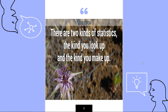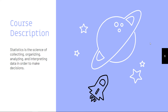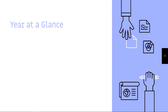A great statistics quote: 'There are two types of statistics — the kind you look up, and the kind you make up.' In this class, you are looking at the kind you look up or decipher by doing calculations. We do not make up statistics. We actually want to analyze the world to see if what we think is what is actually going on. Statistics is the science of collecting, organizing, analyzing, and interpreting data in order to make decisions.